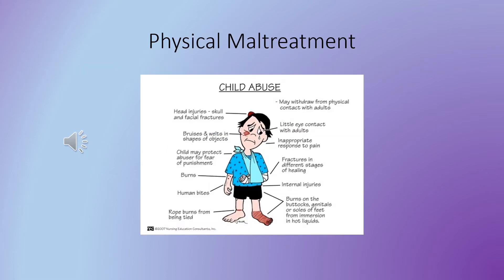The first type of abuse we're going to talk about is physical maltreatment — where the action of the caregiver causes physical harm to the child. It's commonly revealed by burns or injuries to the head or hands, but there can be all kinds of things: bruises, human bite marks, rope burns from being tied up around the wrist or ankles, scalding burns from hot liquid or being immersed in hot water. Look at the pictorial in your notes for various examples of what physical maltreatment could look like.